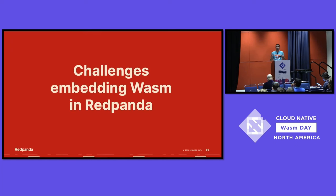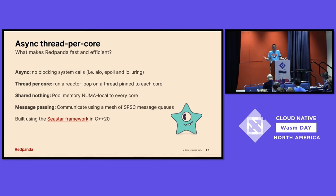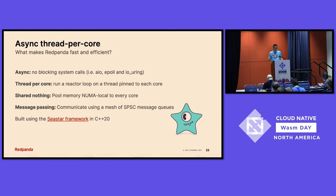That's a whirlwind tour of what data transformations are and how they're architected within Red Panda. Now I want to dive into some of the more technical challenges of embedding a WebAssembly runtime into Red Panda itself. First, what makes Red Panda efficient and fast? We hang our hat on really efficient, low resource utilization workloads at very high throughput and scale. We're a thread-per-core architecture — something the high-performance computing world is very familiar with. We spin up one thread per each logical core in your system.